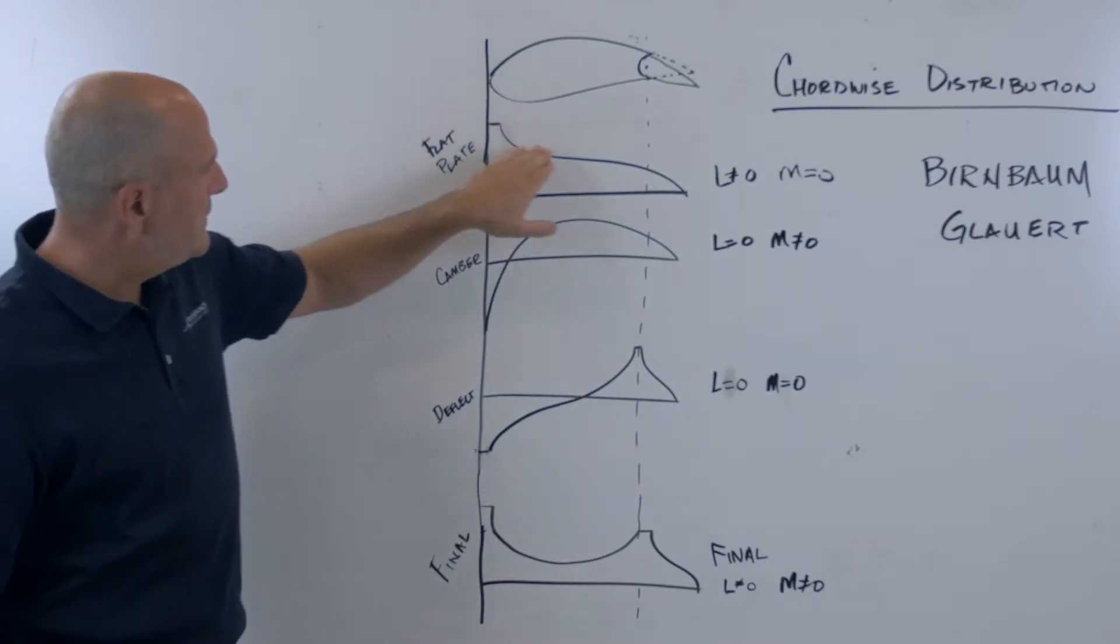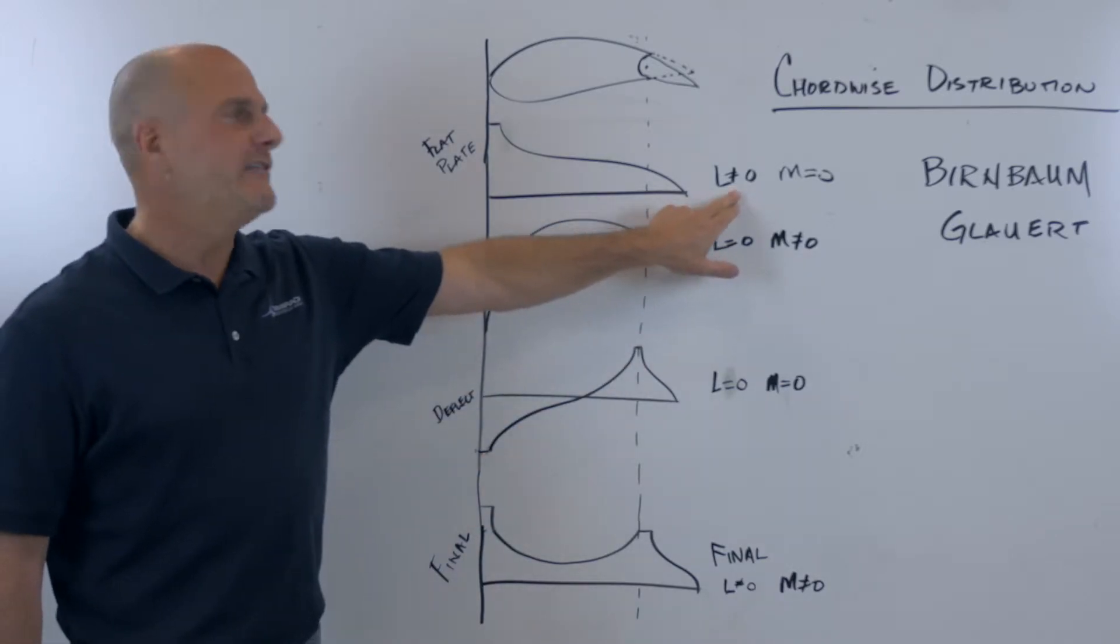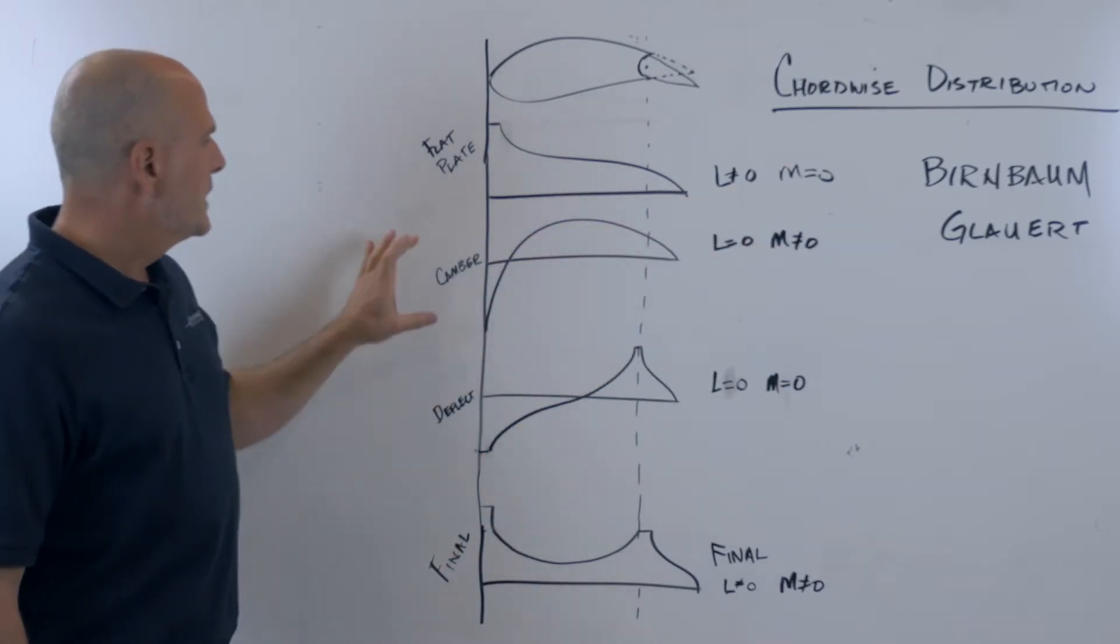The flat plate distribution looks something like this. It has non-zero lift but a zero moment, pitching moment.